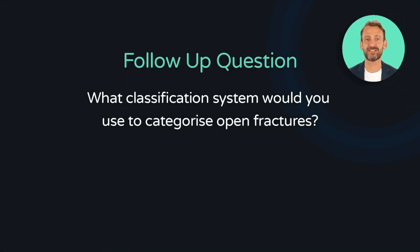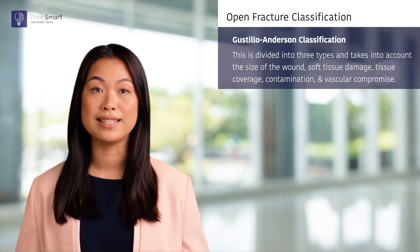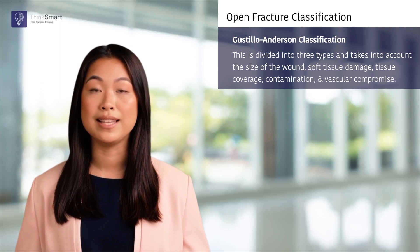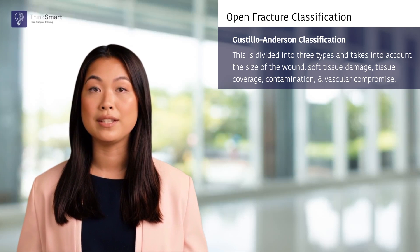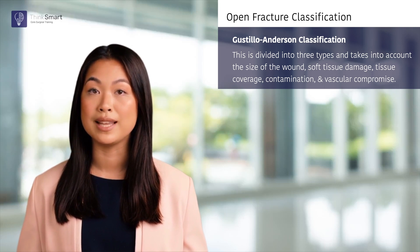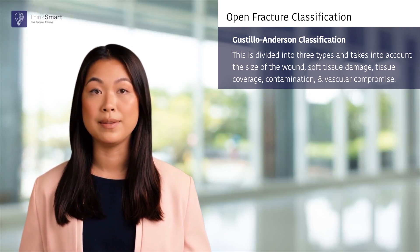What classification system would you use to categorize open fractures? Open fractures are classified using the Gustilo-Anderson classification, which divides them into three types based on the size of the wound, degree of soft tissue damage, bone and soft tissue coverage, contamination, comminution, and vascular compromise.